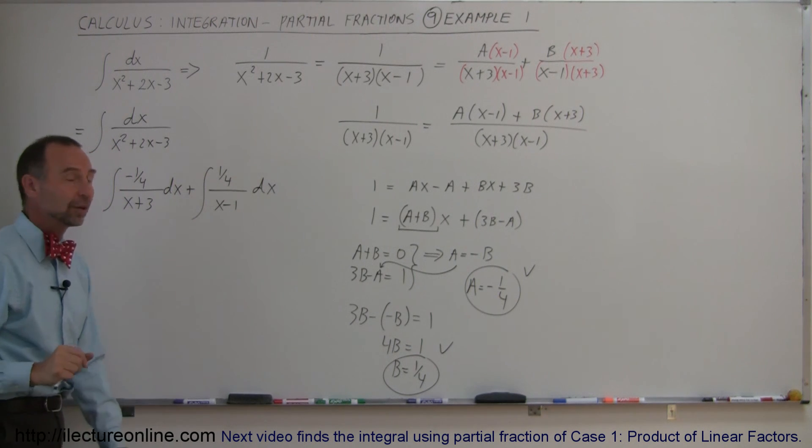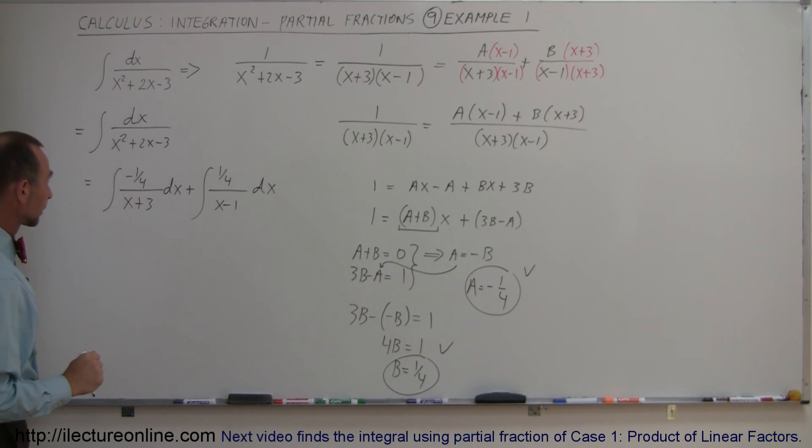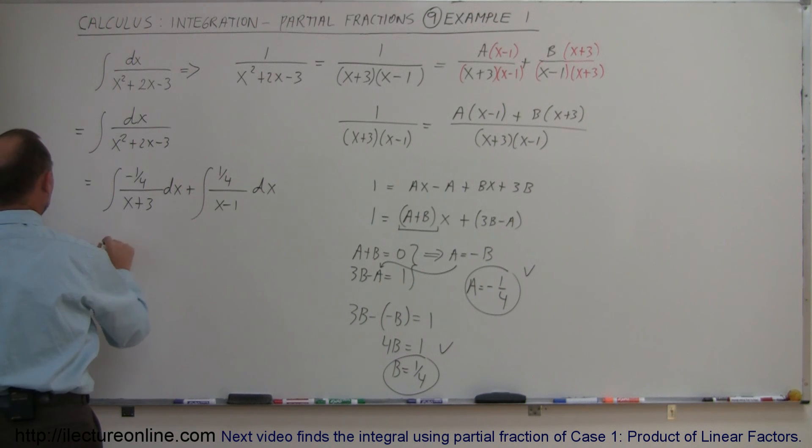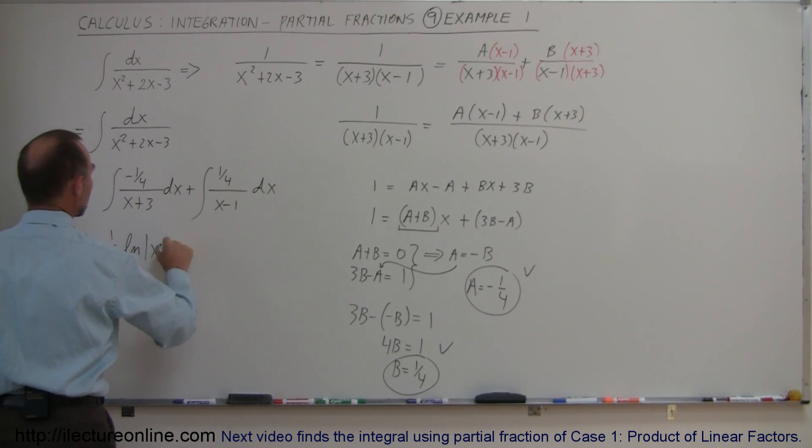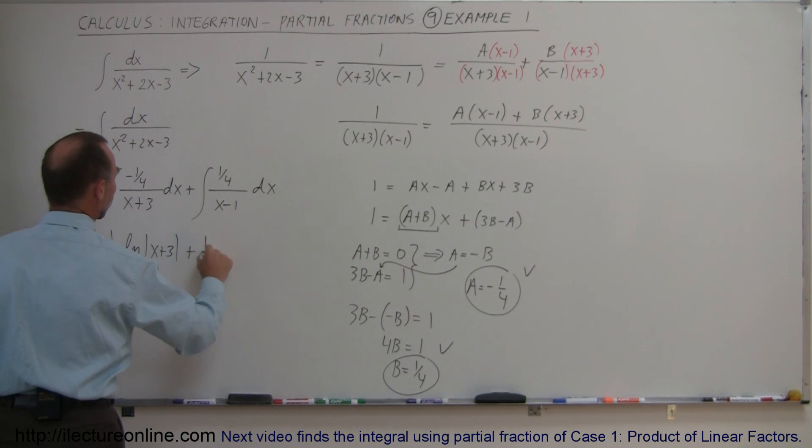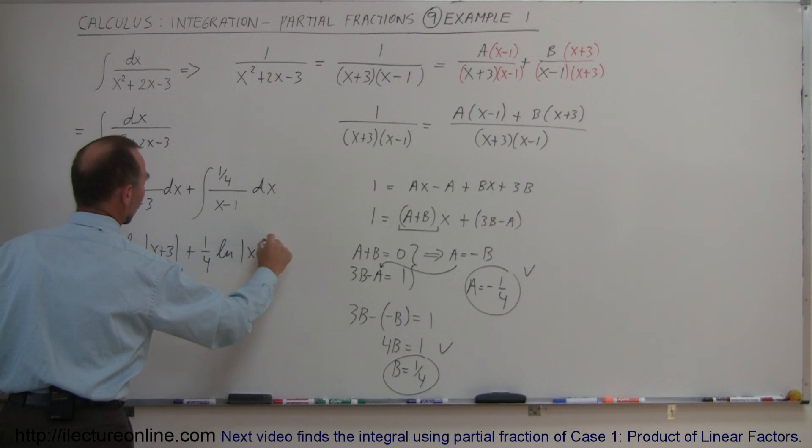I can take the 1 quarter out, and I have 1 over x plus 3 dx, which is simply the natural log of that. So this is equal to minus 1 quarter times the natural log of x plus 3, and that would be plus 1 quarter times the natural log of x minus 1.